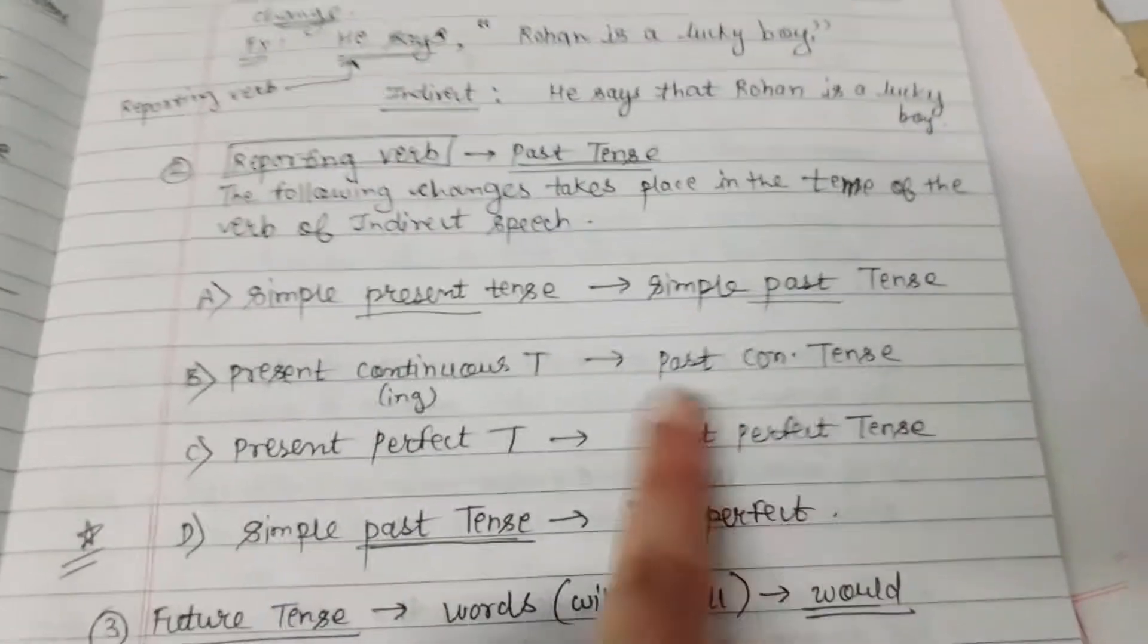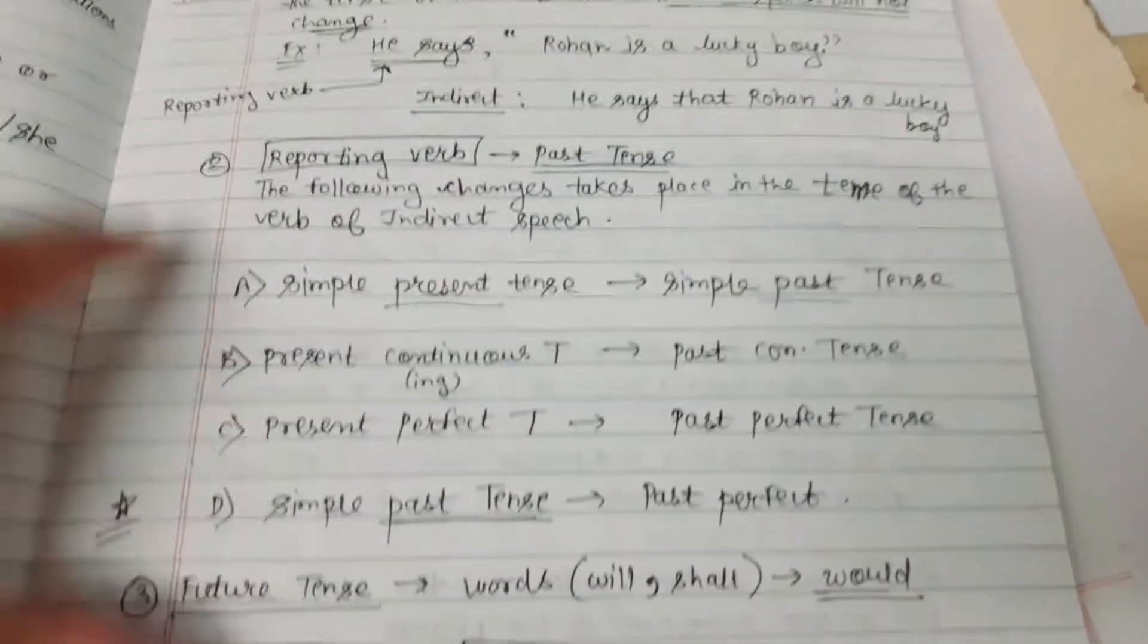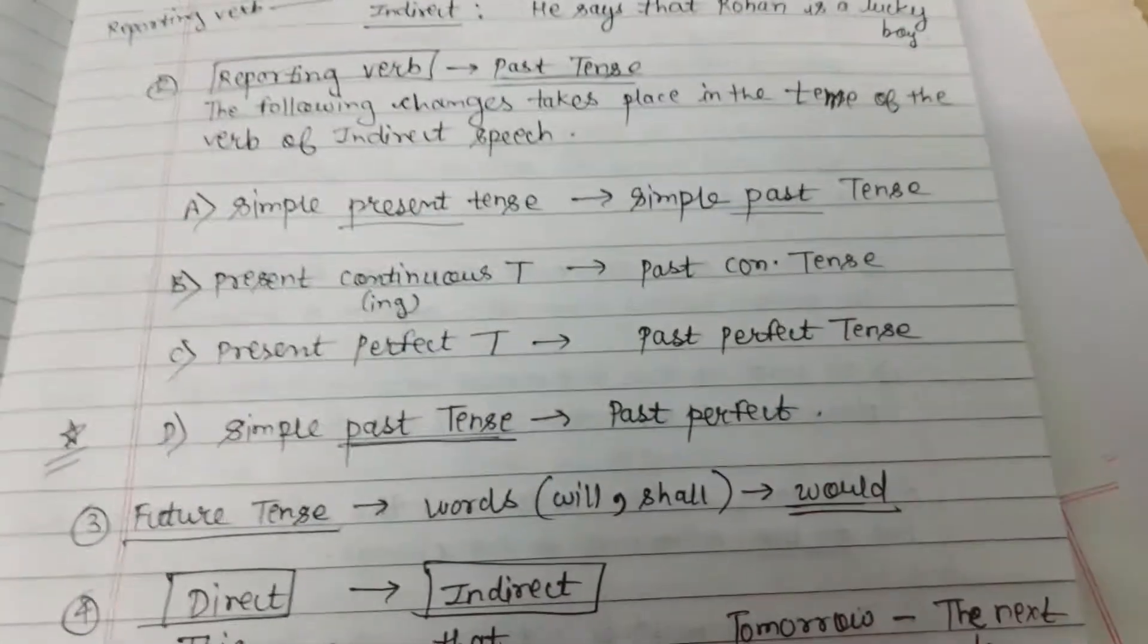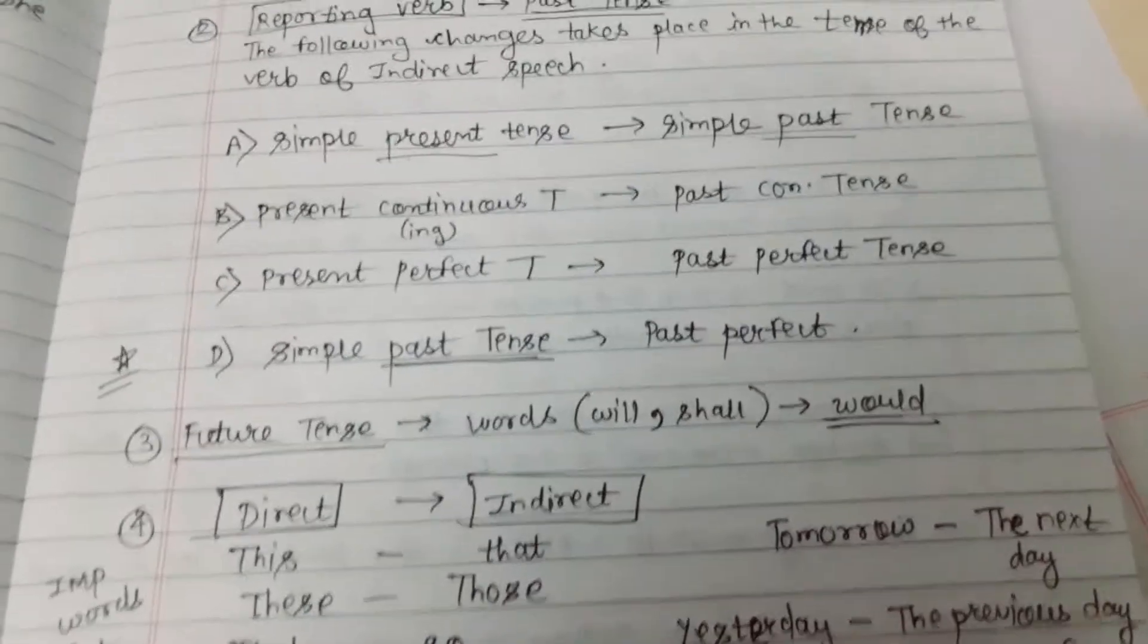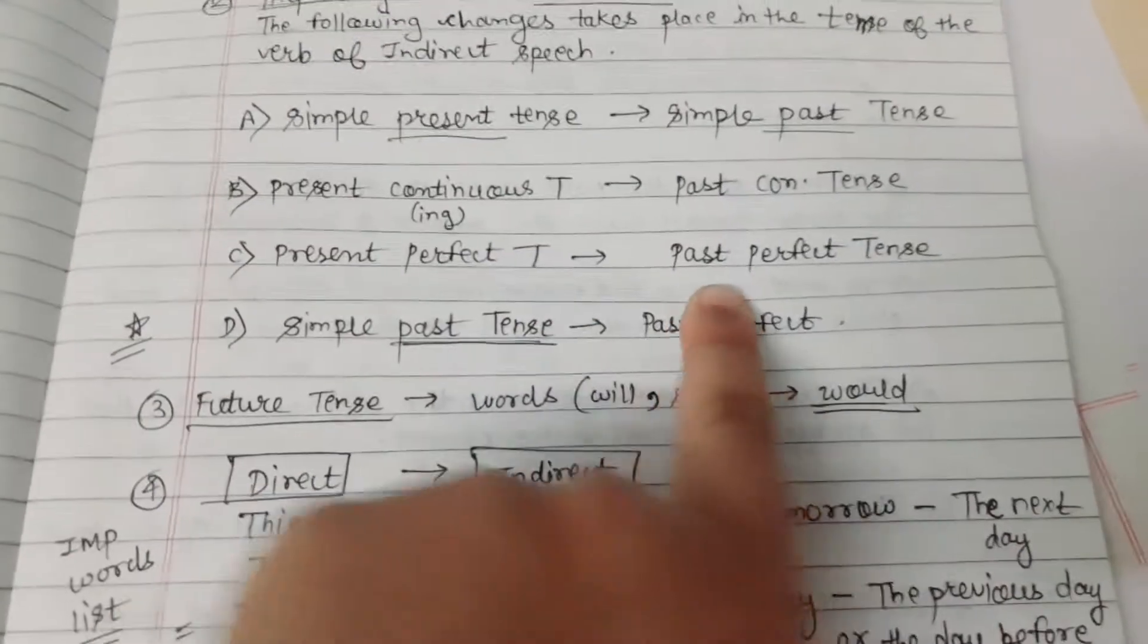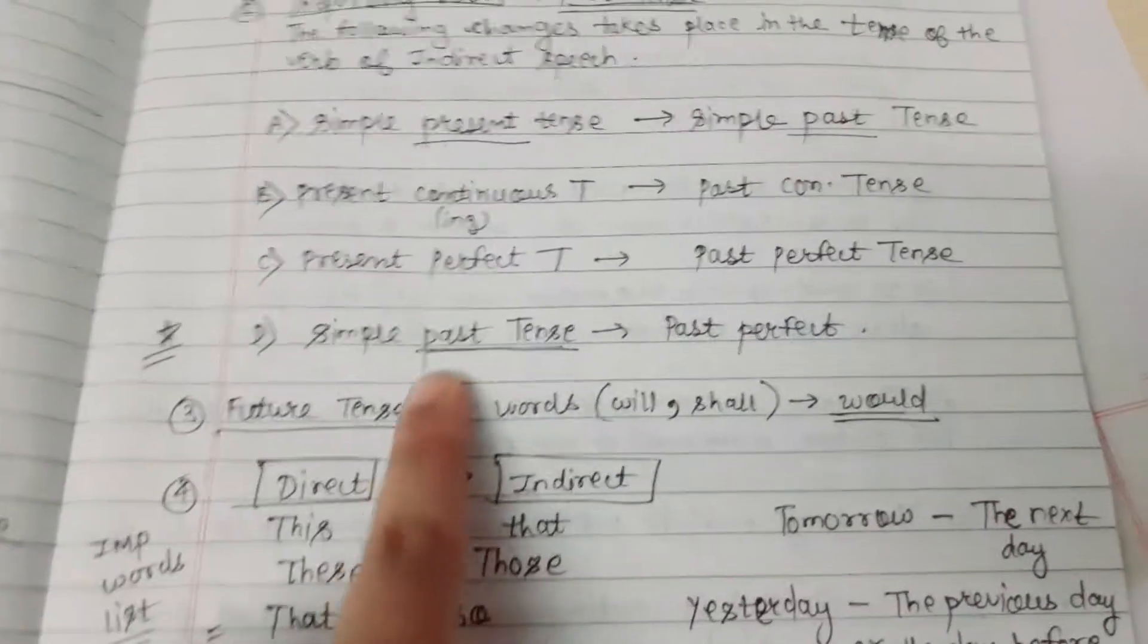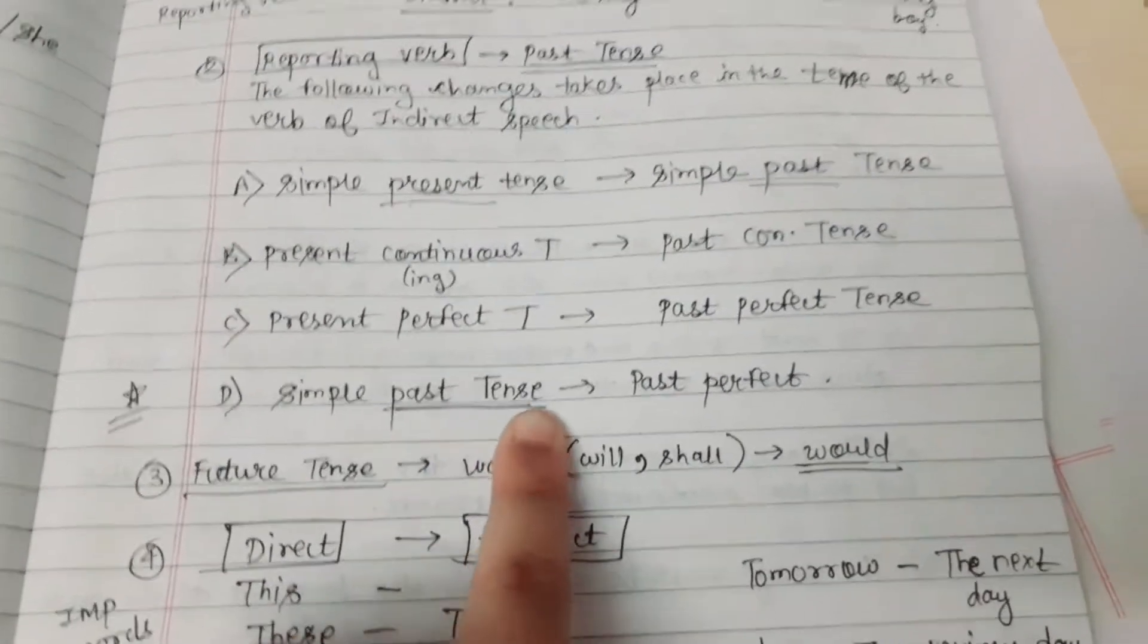When the reporting verb is in present continuous tense, it will become past continuous tense. Present perfect tense will convert into past perfect tense. Simple past tense will convert into past perfect.